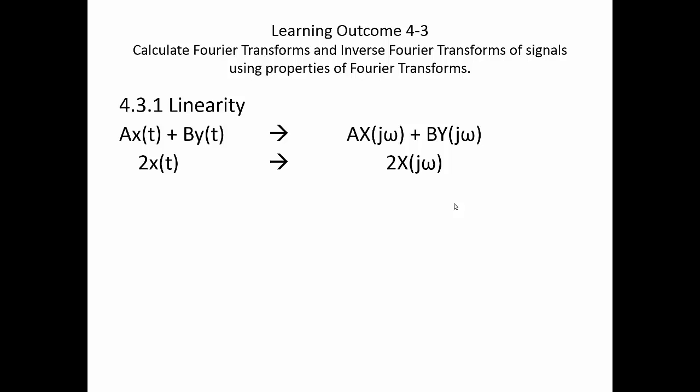Property 4.3.1 in Table 4.1 is also linearity. It works just the same way. If in the time domain, we have a times x of t plus b times y of t, then our transform will be a times x of j omega plus b times y of j omega. So if we have 2x of t, we'll have 2x of j omega.